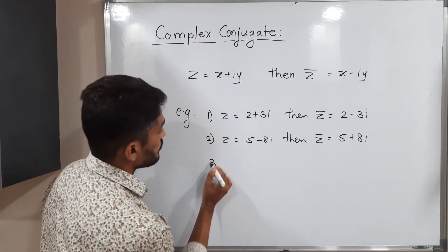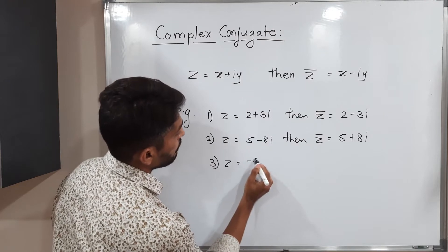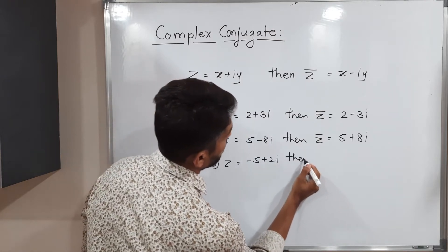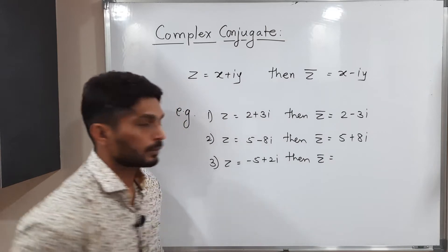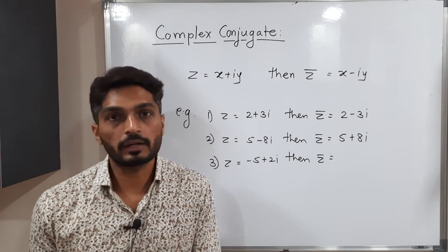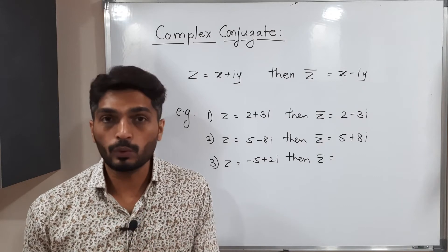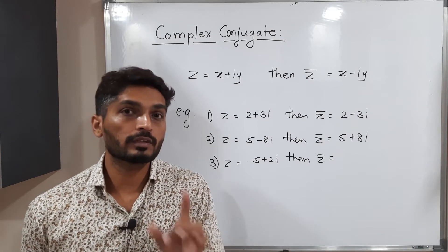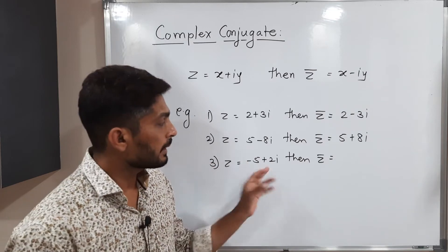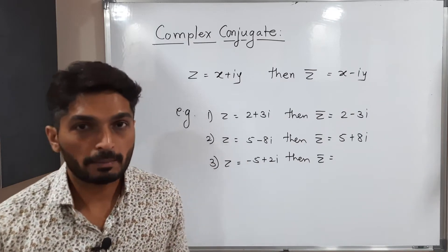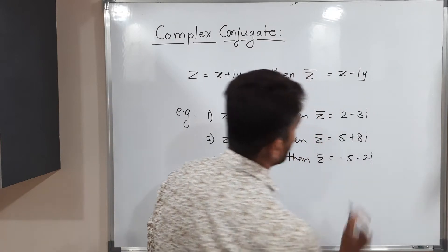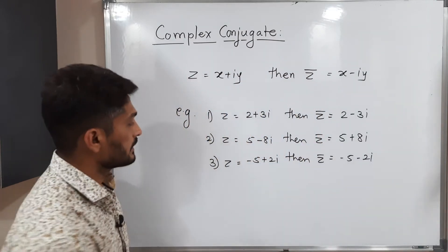One more example: z is equal to minus 5 plus 2i. Then z-bar equals — you might get confused because 5 also has a minus sign, but we do not change the sign of the real part. We focus only on the imaginary part. The imaginary part has a plus sign, so we change it to minus. Therefore z-bar is equal to minus 5 minus 2i.